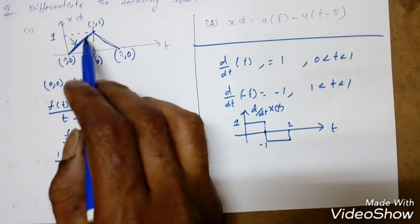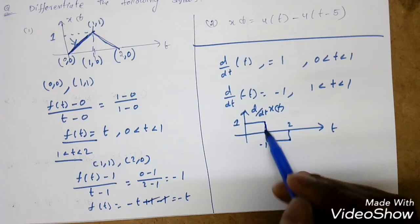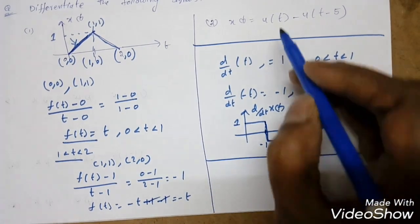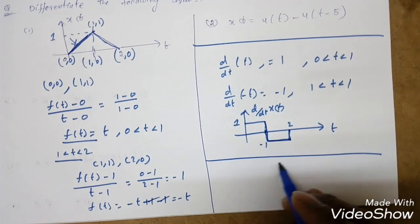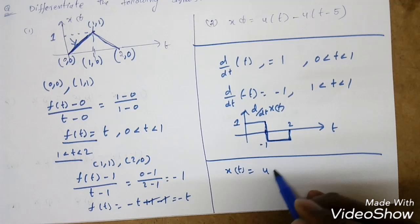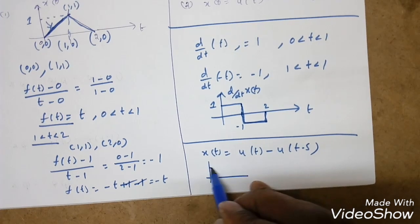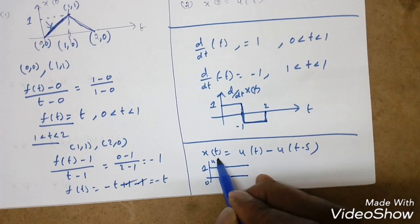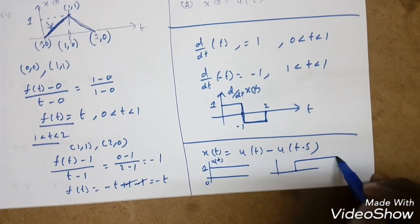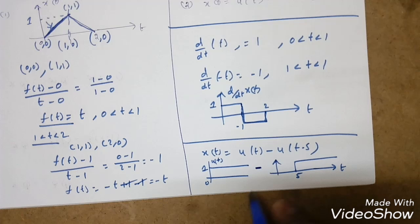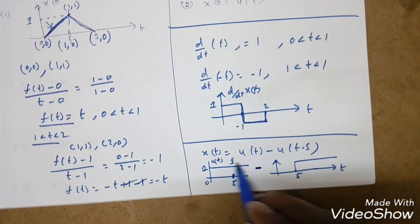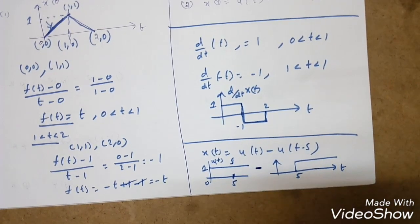Next question: x(t) = u(t) - u(t-5). Drawing u(t) gives a step at 0, and u(t-5) is shifted to start at 5. Subtracting them: from 0 to 5 we get 1, and from 5 to infinity we get 1-1=0.